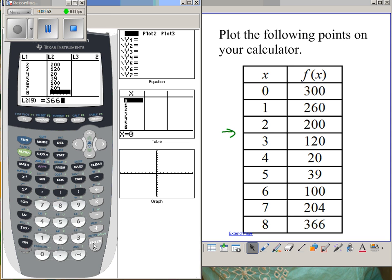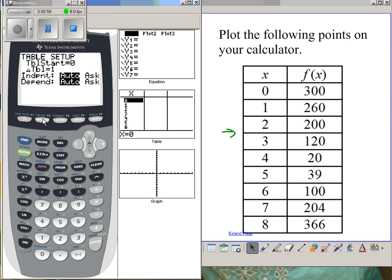Now I have my lists and I want to see what that looks like. I can set my window. My x-min doesn't need to be lower than zero but I usually like to go a little smaller, so I'll go from -1 to 9 for my x's.